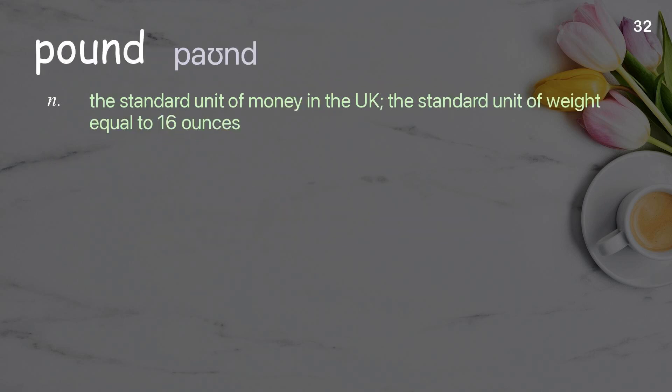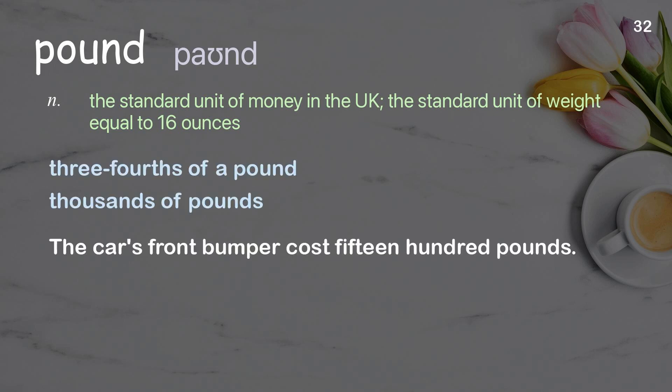Pound: the standard unit of money in the UK; the standard unit of weight equal to 16 ounces. Examples: three-fourths of a pound, thousands of pounds. The car's front bumper cost 1,500 pounds.